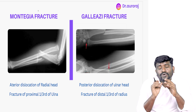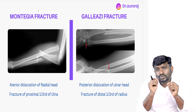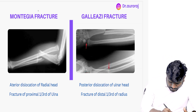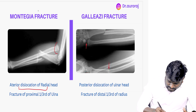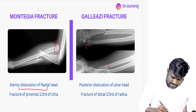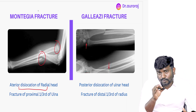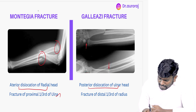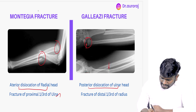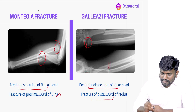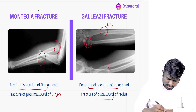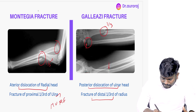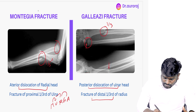Monteggia and Galeazzi fractures are very important, and it is very important to know the differences between these two. Monteggia fracture is going to be anterior dislocation of the radial head with a fracture at the proximal one-third of the ulna. In Galeazzi fracture, there is a dislocation at the ulnar head and a fracture at the distal one-third of the radius. Remember the pneumonic: Monteggia — ulnar nerve injured; Galeazzi — radial nerve injured.